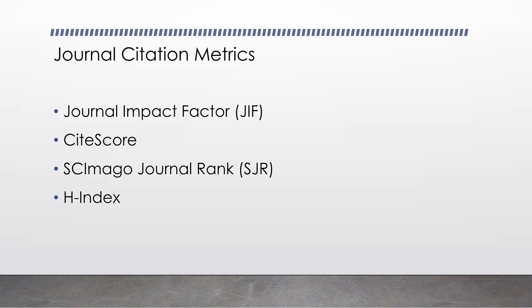The first is the Journal Impact Factor, or JIF. The journal impact factor is a ratio representing the average number of citations a document in a journal receives for items published in the previous two years. The JIF shows how highly cited a document in a journal is relative to other documents in its discipline. To calculate the impact factor, you look at the number of citations a journal receives in a given year — say 2020 — from articles published in the previous two years, 2018 and 2019.